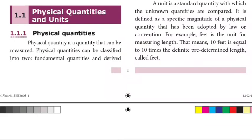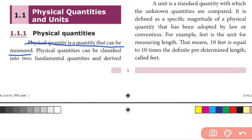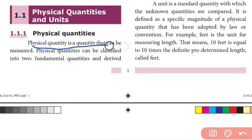They are called physical quantities. We need to measure physical quantities. First of all, we need to understand what physical quantities are. A physical quantity is a quantity that can be measured — for example, length and mass.